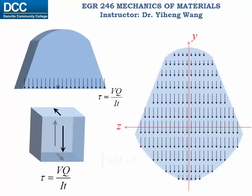The integration of shear stress over the cross-sectional area should equal the internal shear force V at that location. According to our analysis, shear stress varies with x and y coordinates, but it follows a uniform distribution along the z-axis. However, in reality, shear stress varies with z as well.